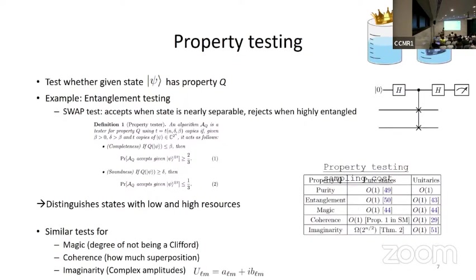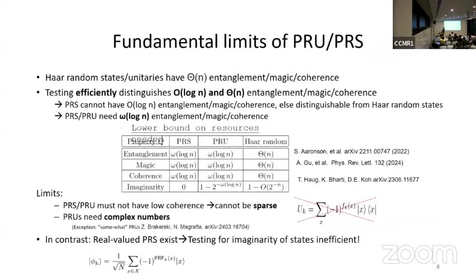One can do this not only for entanglement, but people have proposed similar testers for other important quantum resources. For example, there are tests for magic — the degree of not being a Clifford state — and for coherence, which measures how much superposition a state or unitary has, and also imaginarity, which asks how much complex amplitude is in a quantum state or unitary. These are all important resources needed for quantum computing and quantum communication.